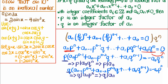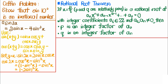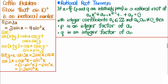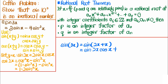Now we'll move to the triple angle identity. To show it, we'll use the angle sum formula for sine and split 3x into 2x + x. So sine(3x) = sine(2x + x), and applying the angle sum formula gives sine(2x)·cosine(x) + cosine(2x)·sine(x).